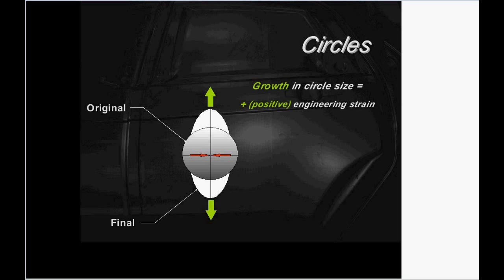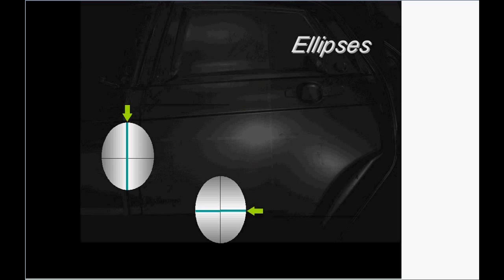If the circle is smaller and there's a reduction in that circle as it forms an ellipse, we can calculate a negative engineering strain. So, we've already got the tools for calculating those strains if we know what size circle we put on and if we have a way of measuring the ellipse.